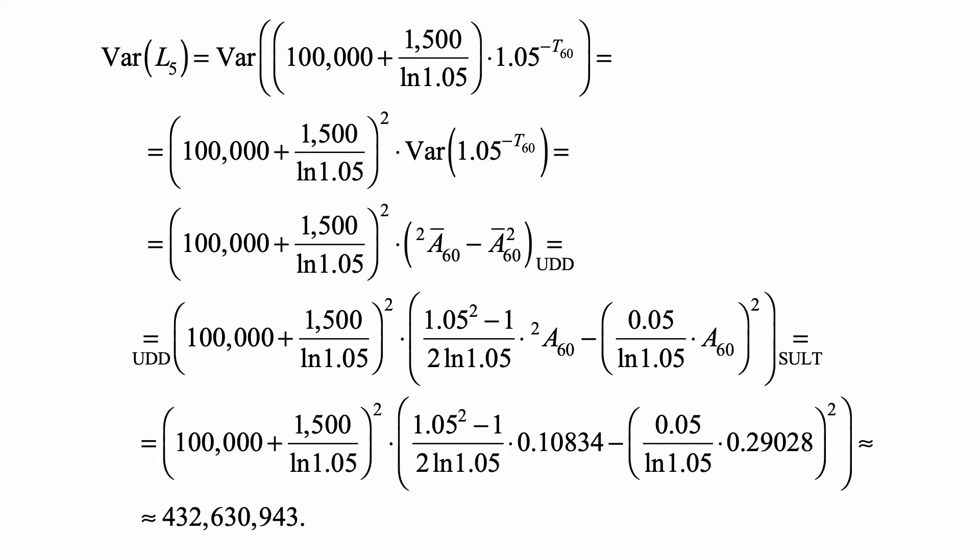The top is the effective interest rate over a year with twice the force of mortality. This is just i over δ, but i is replaced by the interest rate corresponding to twice the force of mortality, and δ is replaced by 2δ.